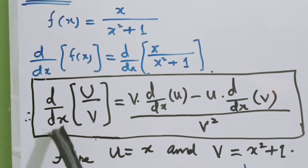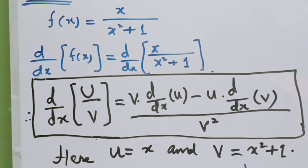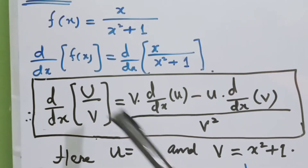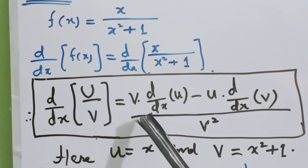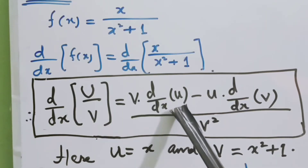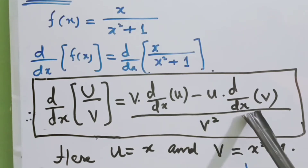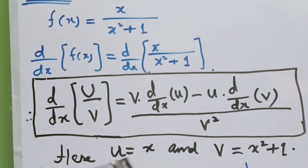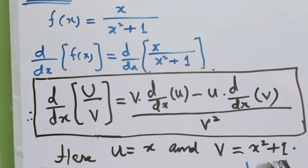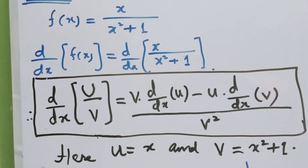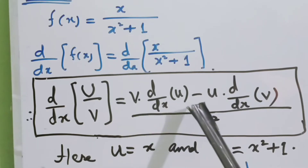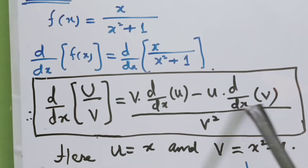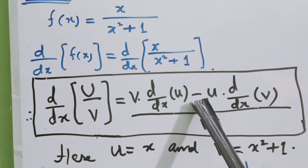We apply the formula — the u upon v method. In this method, the derivative is found by taking v times the derivative of u with respect to x, minus u times the derivative of v with respect to x, all divided by v². In between these two terms there is a subtraction sign.